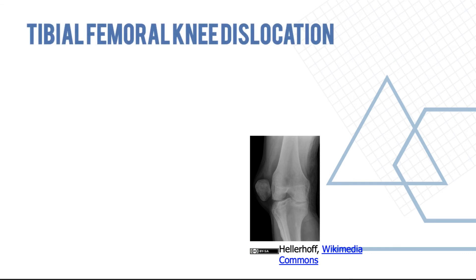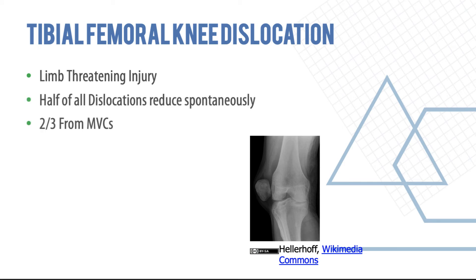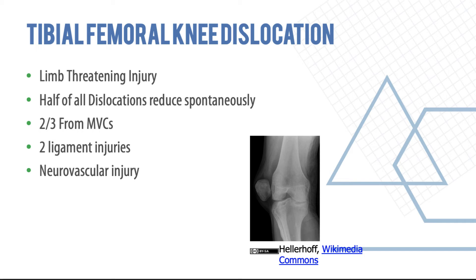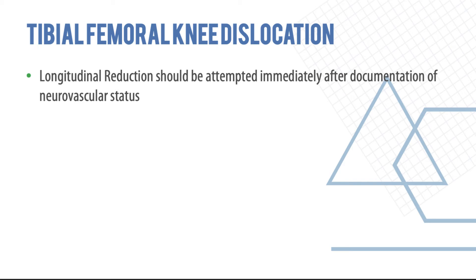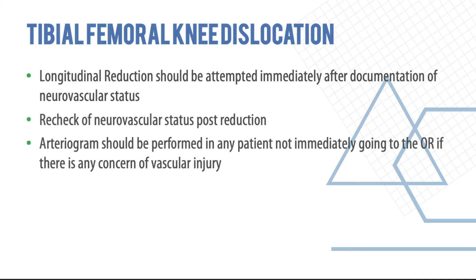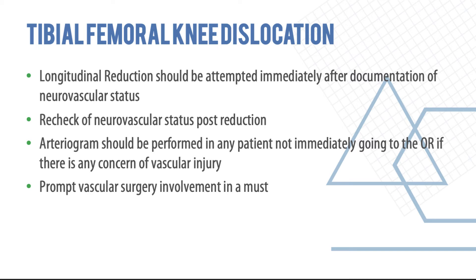Knee dislocations can be very fatal and limb-threatening. Half reduce spontaneously; two-thirds are from motor vehicle accidents. They are usually associated with multiple ligament injuries — at least two ligaments are ruptured. Neurovascular injuries are very common. Reduction should be attempted for all knee dislocations, and neurovascular status must be carefully documented before and after reduction. An arteriogram should be performed in any patient not going to the operating room. If there is any suspicion of vascular injury, vascular surgery involvement should be prompt.